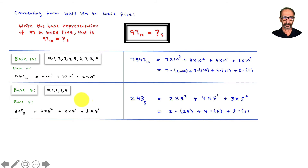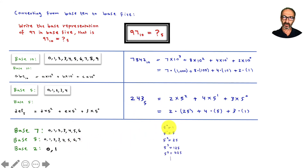In base 7, we don't have the number 7 — it only goes up to 6. In base 8, we don't have the number 8. In base 2, it's just 0 and 1 — we don't have the number 2. Since our focus is on base 5, here are the place values: in base 10 we call them tens, hundreds, thousands.